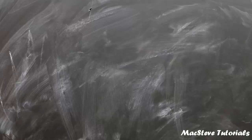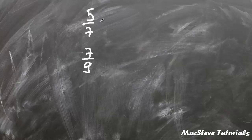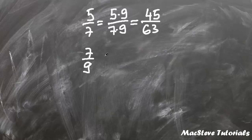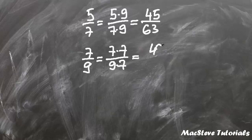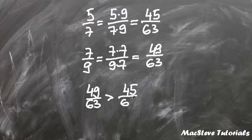In this example we will compare 5 sevenths and 7 ninths. We multiply 5 sevenths by 9 and get 45 over 63. Next we multiply 7 ninths by 7 and we get 49 over 63. As you can see, 49 over 63 is greater than 45 over 63, which means that 7 ninths is greater than 5 sevenths.